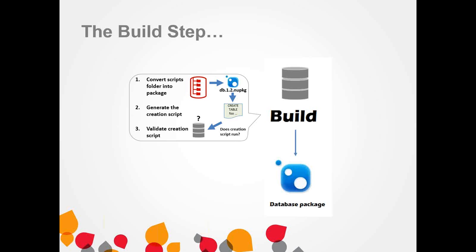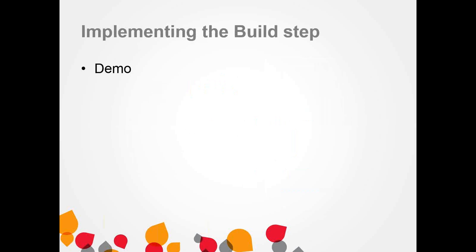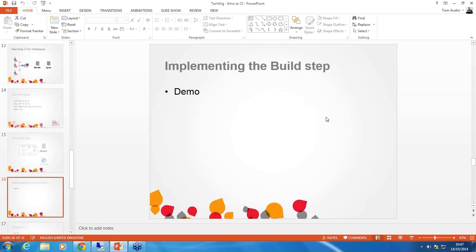If the database we've created matches the format described in the source control script files, we confirm that we were able to build this database from those files. The output of this step is the database package — a fixed set of database source control scripts representing each of the objects in our database. So the process is: create a blank database, grab the latest files from source control, compare those to the blank database to generate a creation script, run the creation script against the target, compare the result to the source control version, and if they match, output the database package.